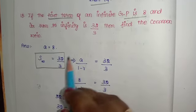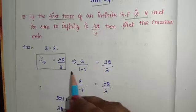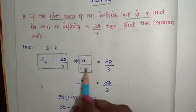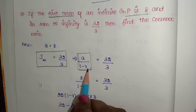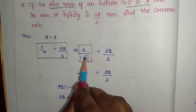For sum to infinity, the formula is a/(1-r). This is the formula we need to use to find r.